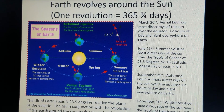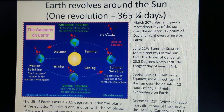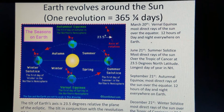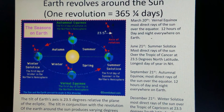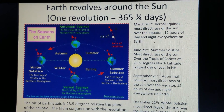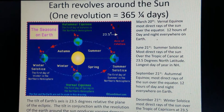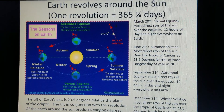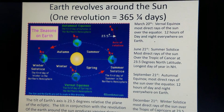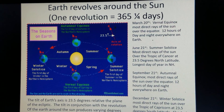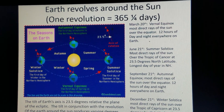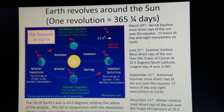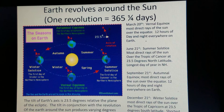June 21st, the summer solstice, is the first day of summer in the Northern Hemisphere. The most direct rays of the Sun are overhead the Tropic of Cancer at 23.5 degrees north latitude, and this is the longest day of the year in the Northern Hemisphere. June 21st is the opposite in the Southern Hemisphere — it's the first day of winter there. September 21st is the autumnal equinox, and again the most direct rays of the Sun reside over the equator, where we have 12 hours of day and night everywhere on Earth.